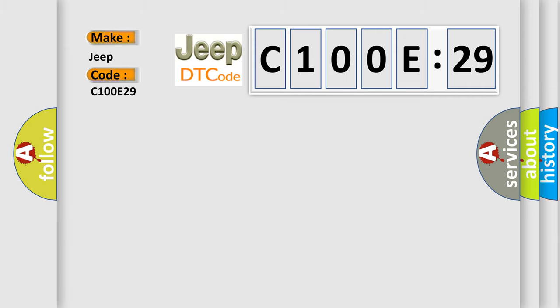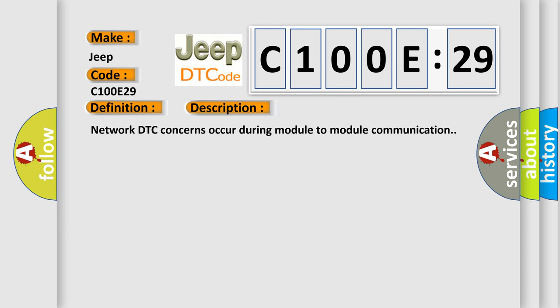The basic definition is Invalid data received from HVAC control module. And now this is a short description of this DTC code. Network DTC concerns occur during module-to-module communication. This diagnostic error occurs most often in these cases.